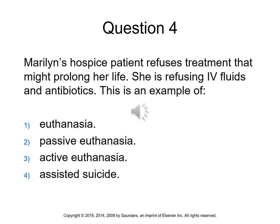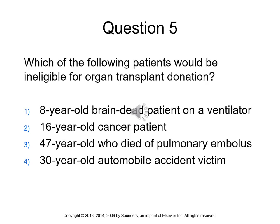Active euthanasia is giving a drug or treatment to kill a patient — the physician actually administers a drug that hastens the person's death. Assisted suicide is making available a way to end a patient's life knowing the intent is suicide — physician-assisted suicide is when the physician orders something and the patient administers it to himself or herself to hasten their death. Question five: Which of the following patients would be ineligible for organ transplant donation? The answer is number two — a 16-year-old cancer patient. Donors have to be free of disease and cancer to be able to donate organs.